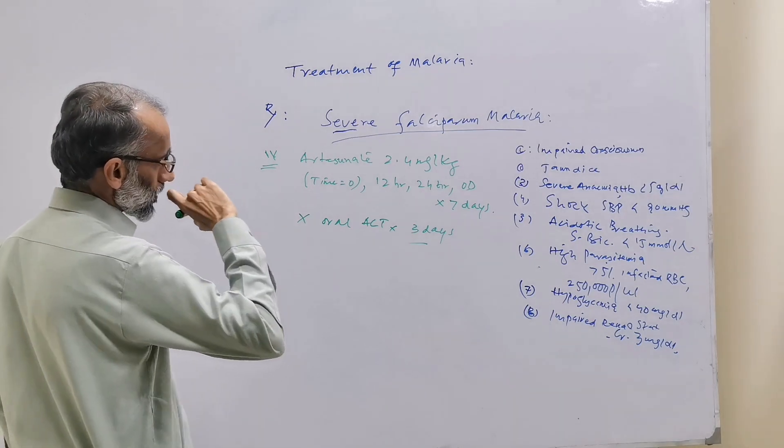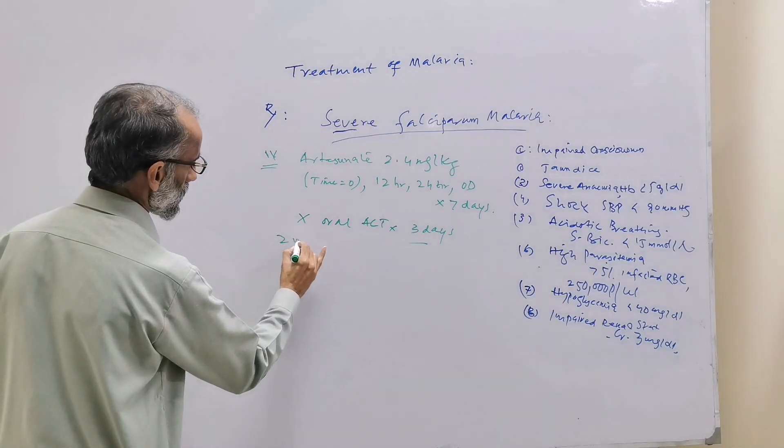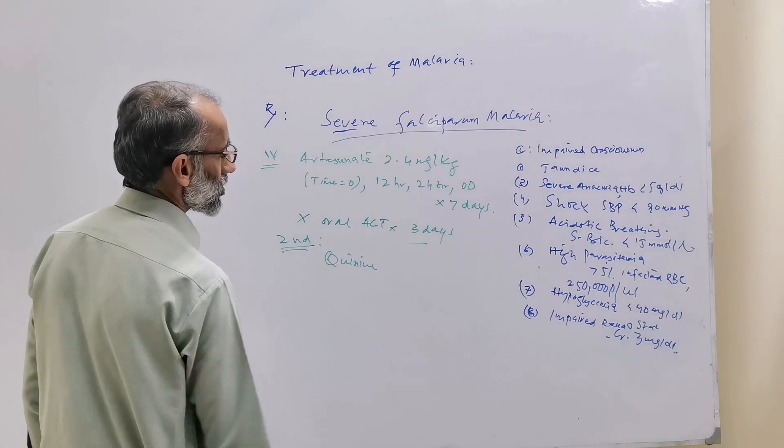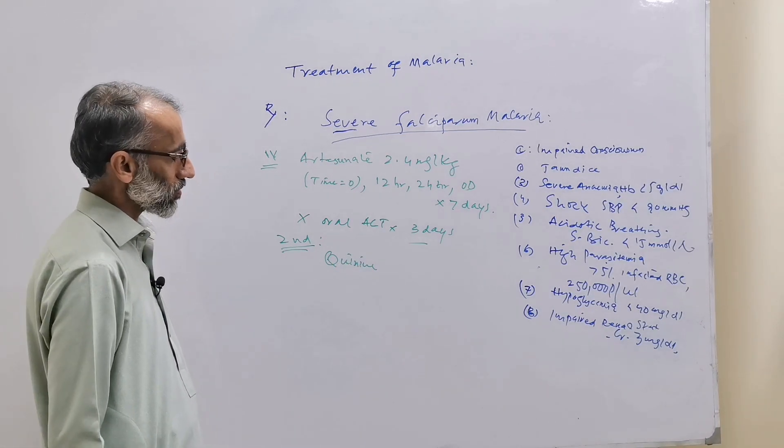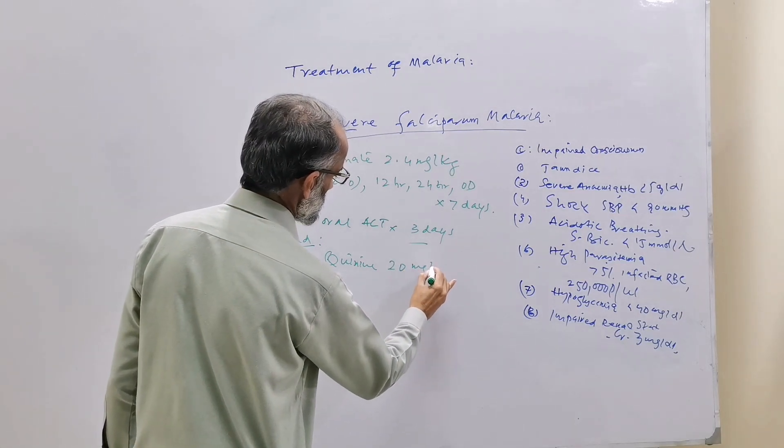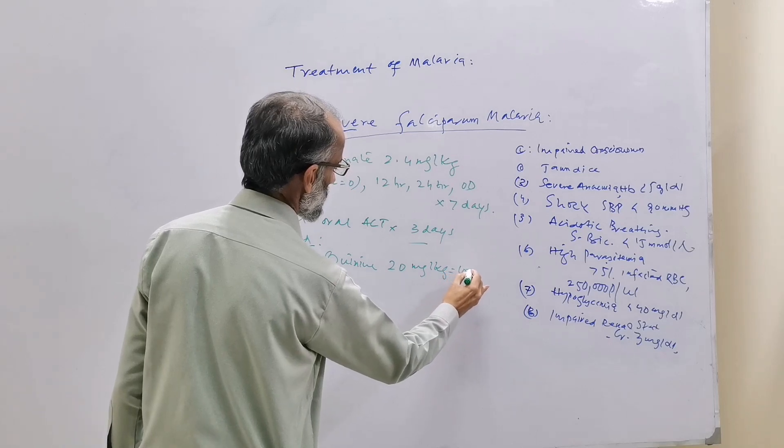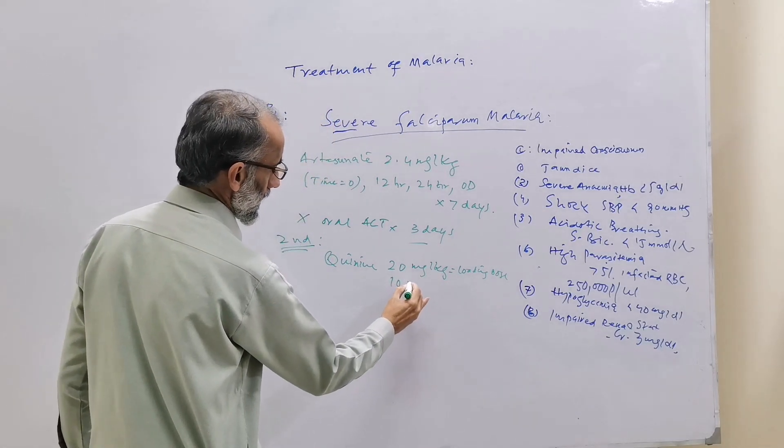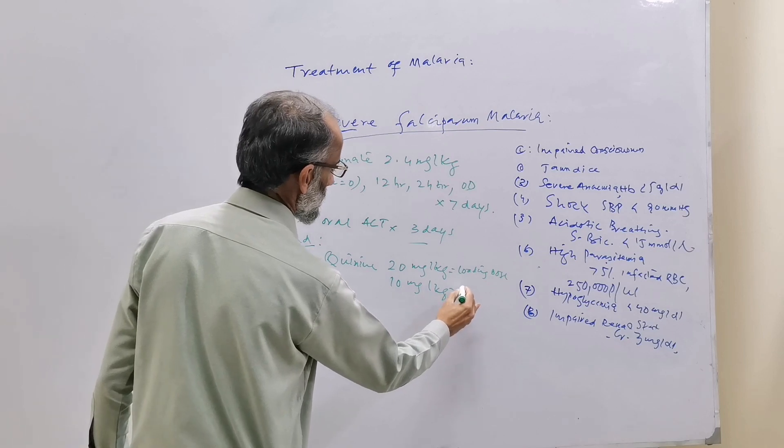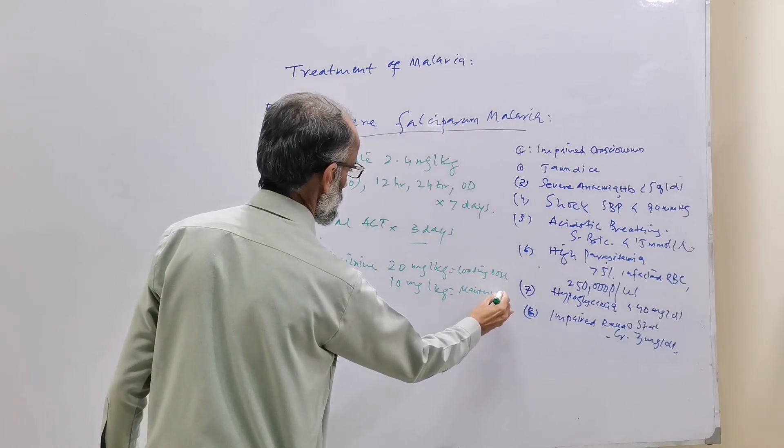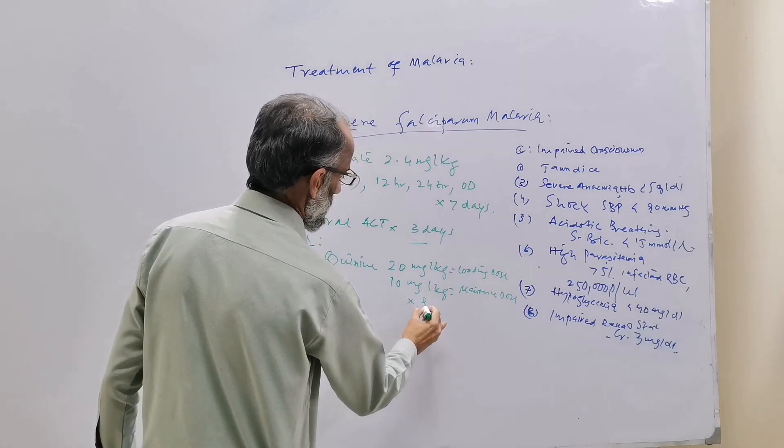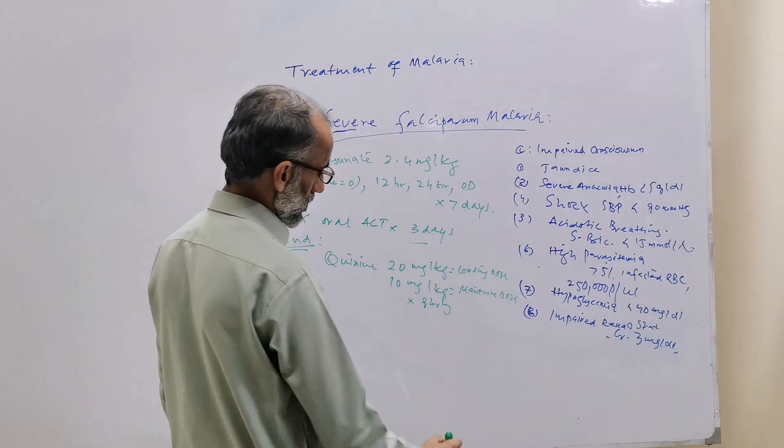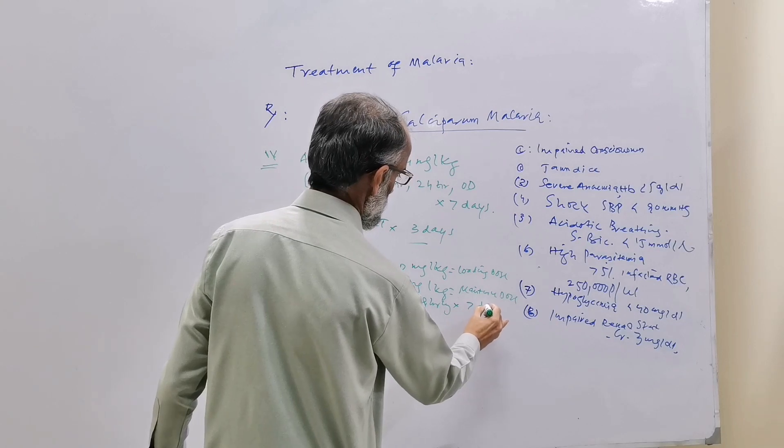The second line treatment for severe Falciparum Malaria is parenteral Quinine, given 20 mg per kg as a loading dose and 10 mg per kg as maintenance dose 8 hourly in 5% dextrose for seven days.